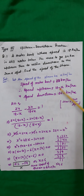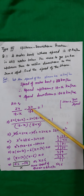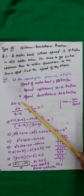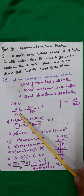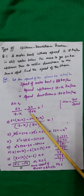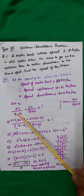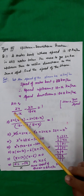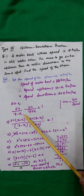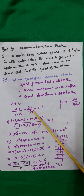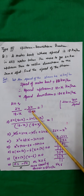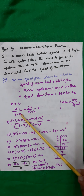In exams, whenever this kind of question comes, students make a mistake — sometimes they write the downstream term first and upstream term next. The idea is we have to write the bigger number first. If the numerators are the same, then the smaller denominator gives the greater value. Here 18 minus x will be smaller than 18 plus x, and when you divide 24 by a smaller number, the quotient is greater. Therefore, 24 upon (18 minus x) minus 24 upon (18 plus x) is equal to 1.